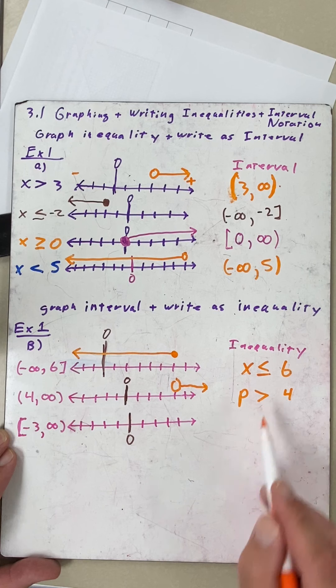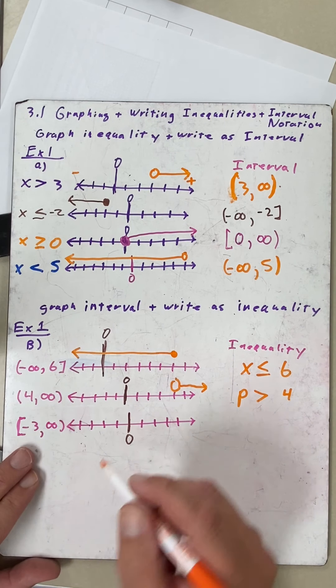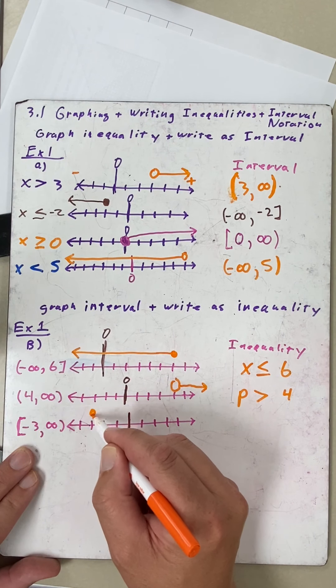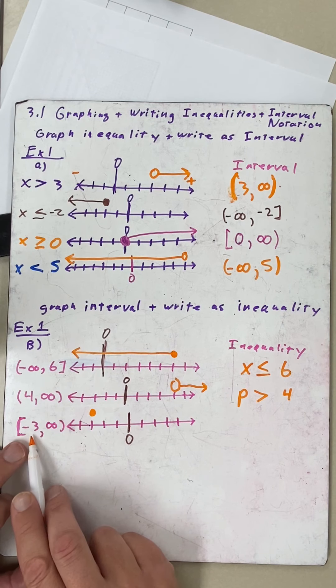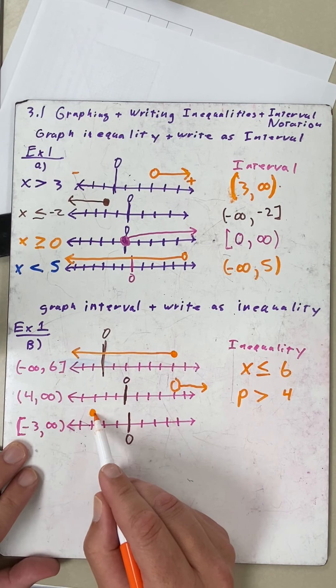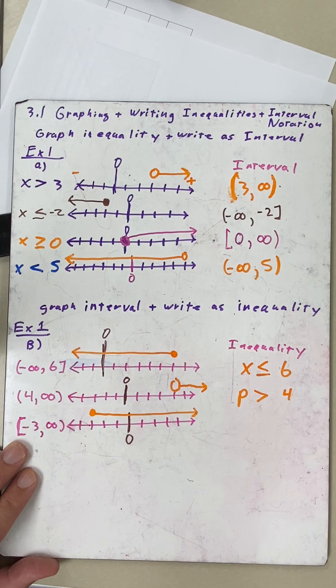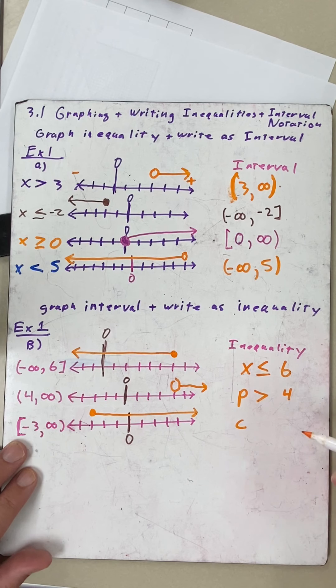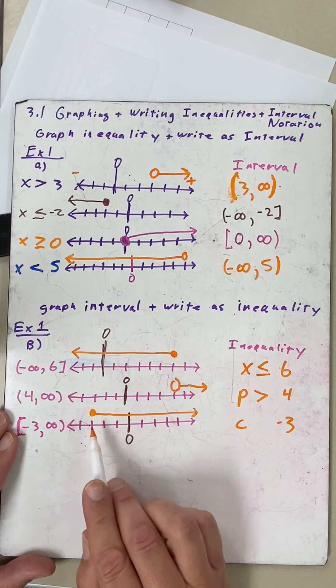For the last one here, we're at negative three, bracket here, so closed circle. This one is also positive infinity. You can see this is on the left, this is on the right, so that's kind of a hint, which means we're going that way. Maybe we use the letter C. We'll use our negative three.